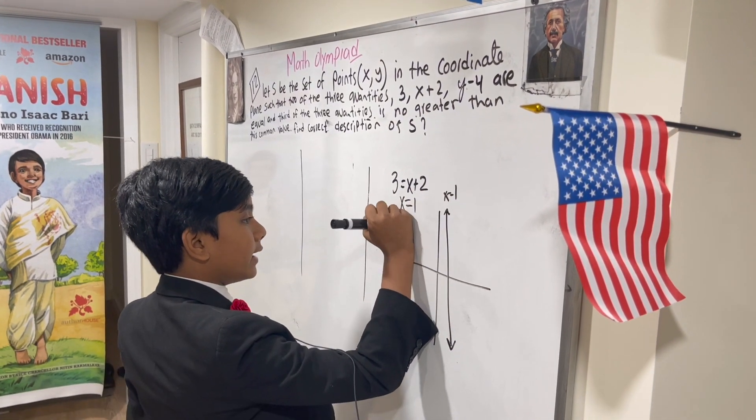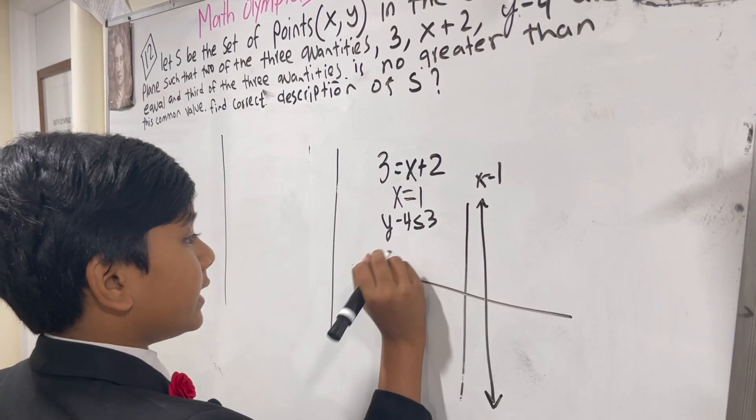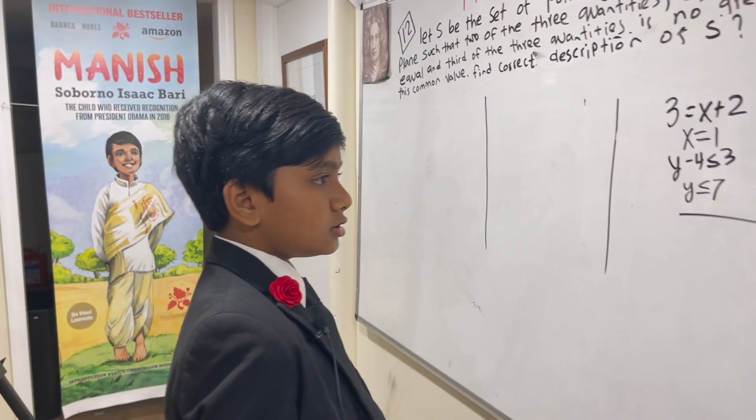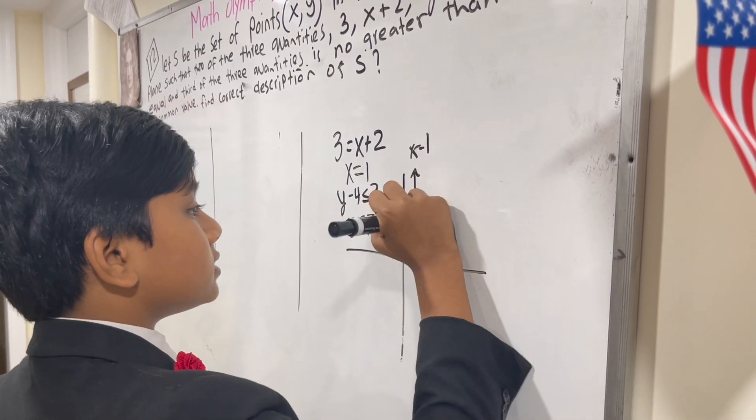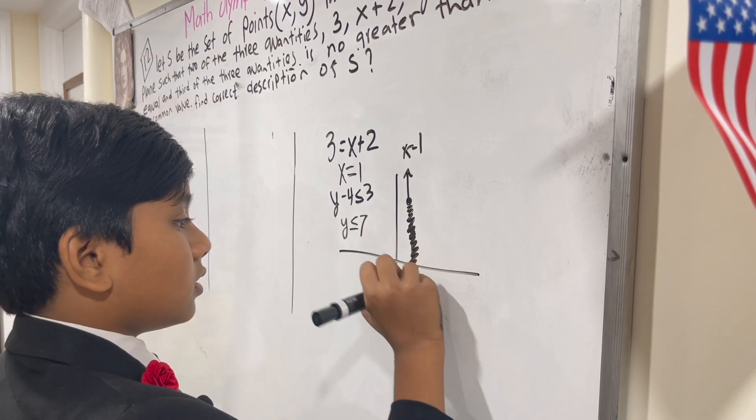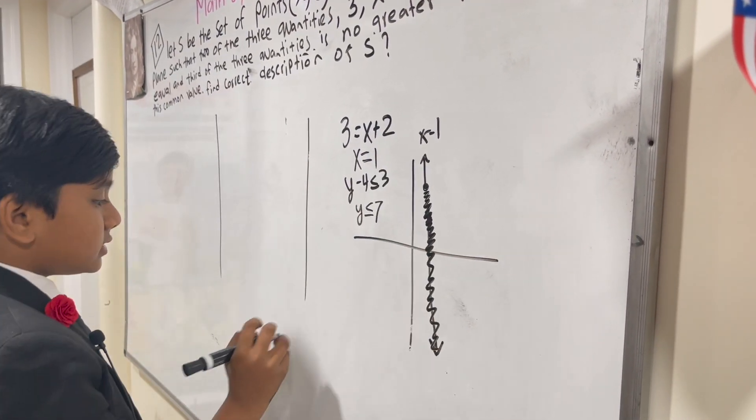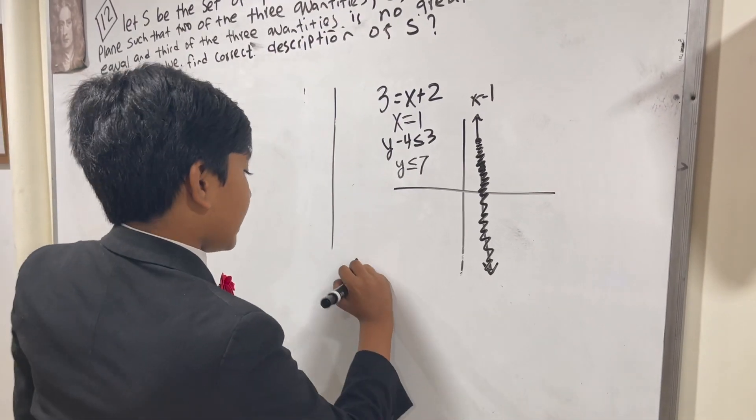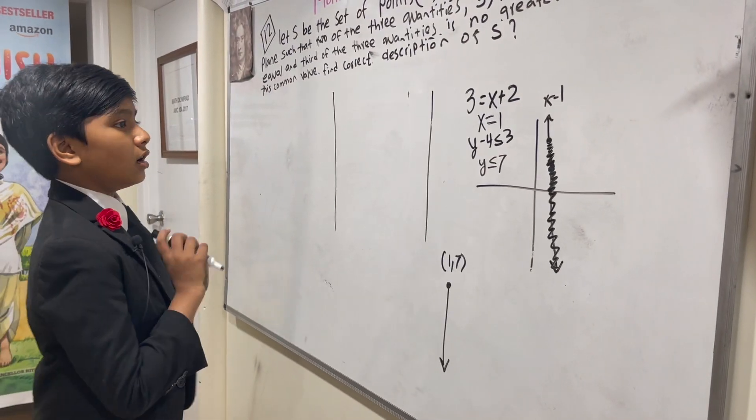And y minus 4 must be less than or equal to 3, meaning y is less than or equal to 7. So that can be expressed like this. So this is part of S. It's a ray with an endpoint of 1, 7.